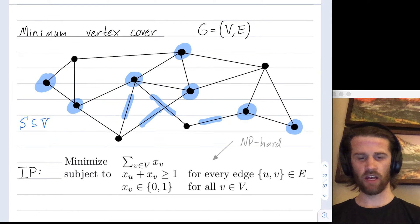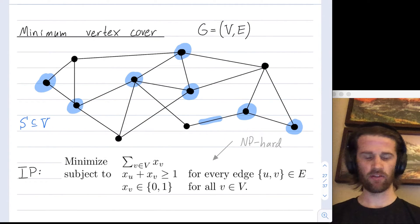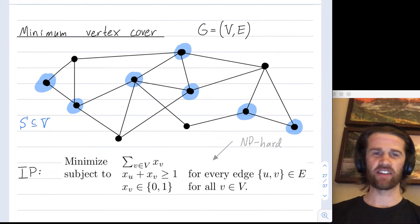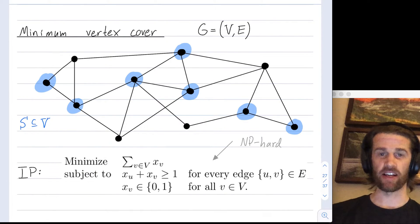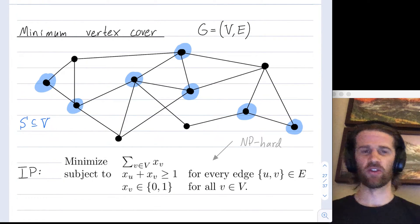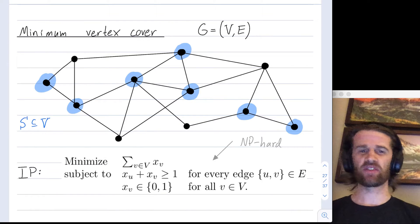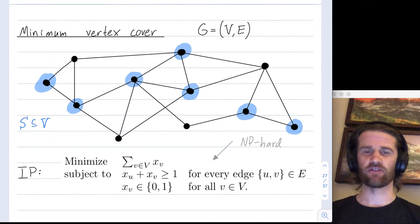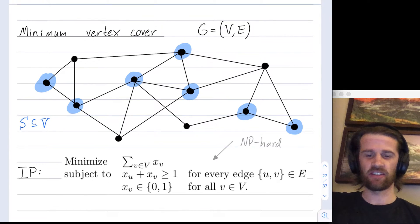All of the edges are covered by at least one adjacent vertex. What we're left with is a valid vertex cover. This subset of vertices, capital S, consists of these seven vertices drawn in blue. Those seven vertices suffice as a vertex cover because every edge is adjacent to at least one of those vertices.